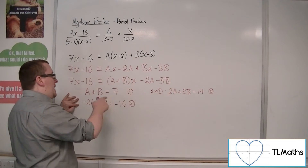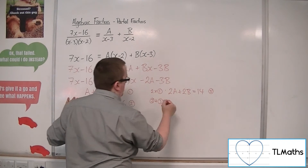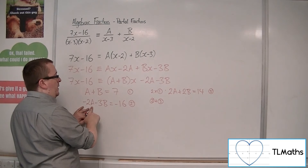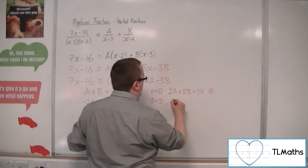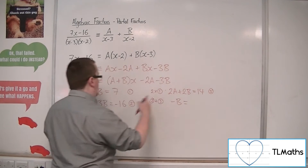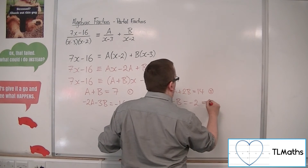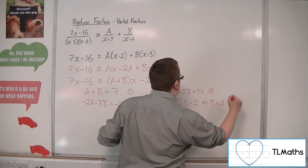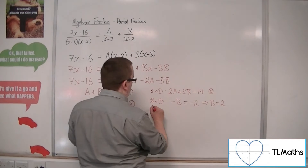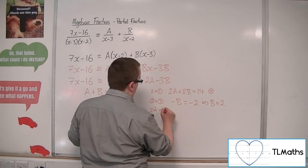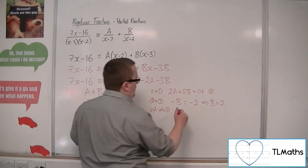If I add equation 2 and equation 3 together: 2a minus 2a cancels, 2b minus 3b gives minus b, and 14 minus 16 gives minus 2. So b equals 2. Substituting back into equation 1, a equals 5.